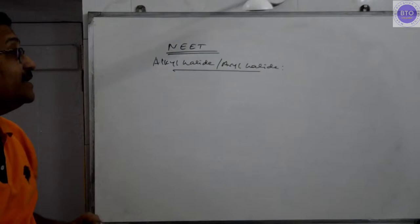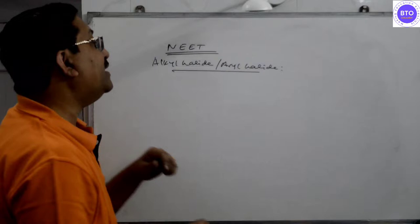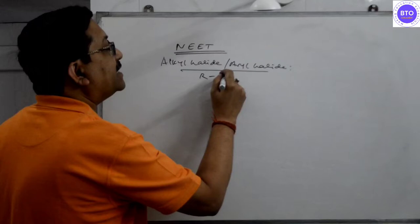Today's topic is alkyl halides. Alkyl halide means when an alkyl group, that is R, is attached to a halogen like Cl, Br, or I.